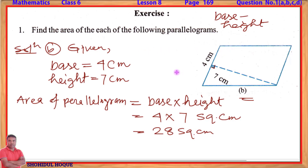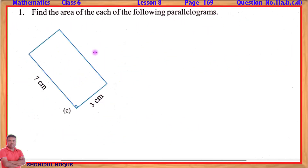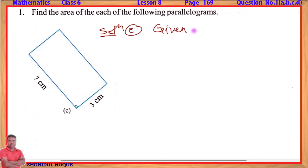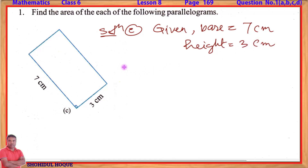For the C number figure, we again identify the base and the height of the parallelogram. The base and height values are read from the diagram. Given: base = 7 cm, height = 3 cm. We now find the area of this parallelogram.